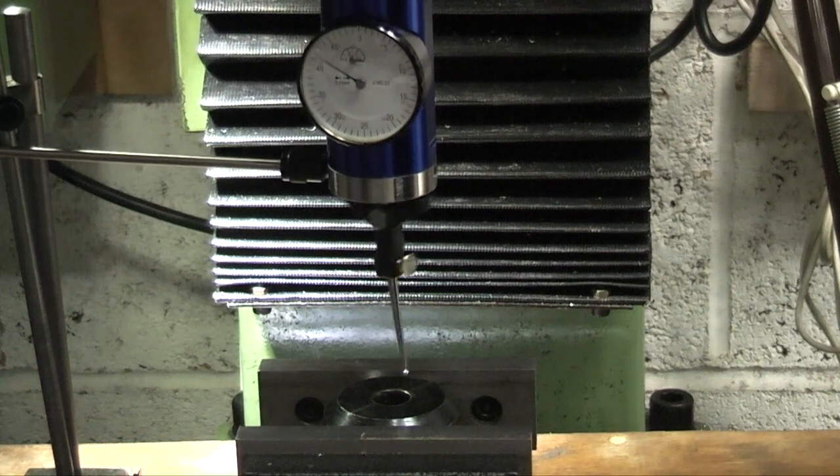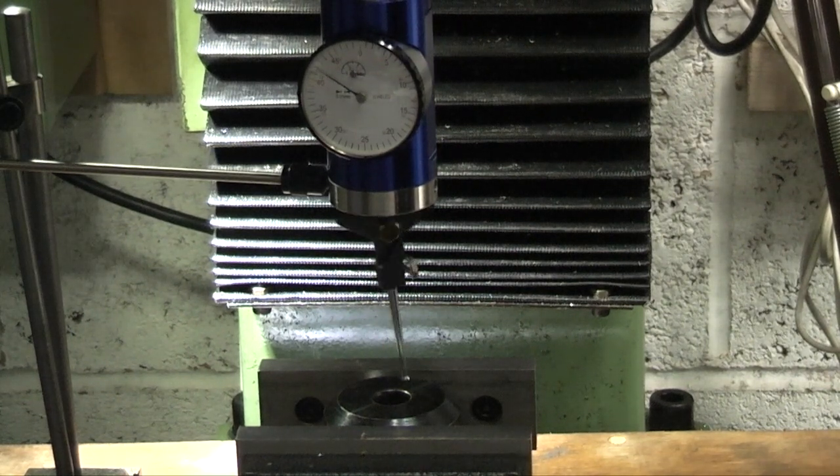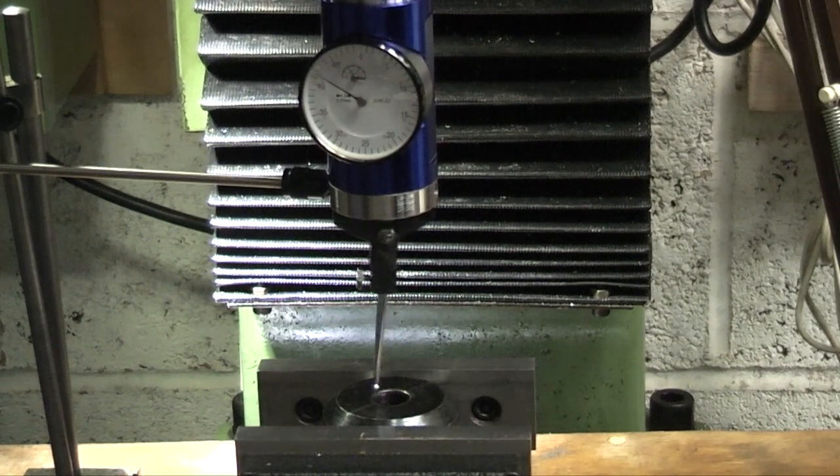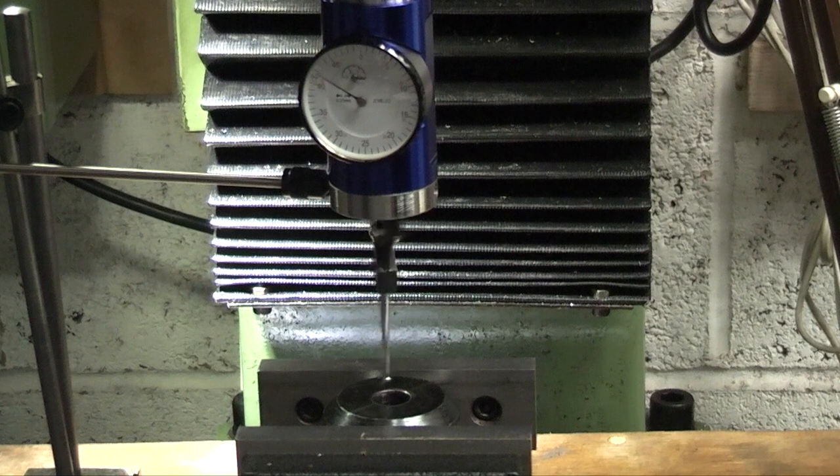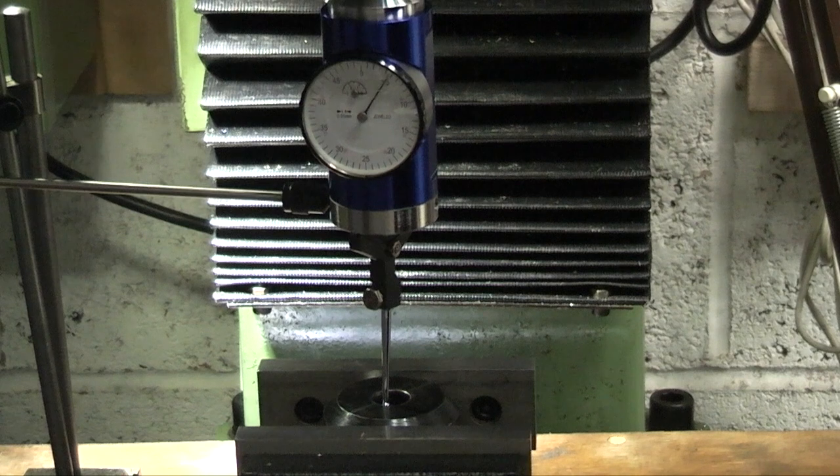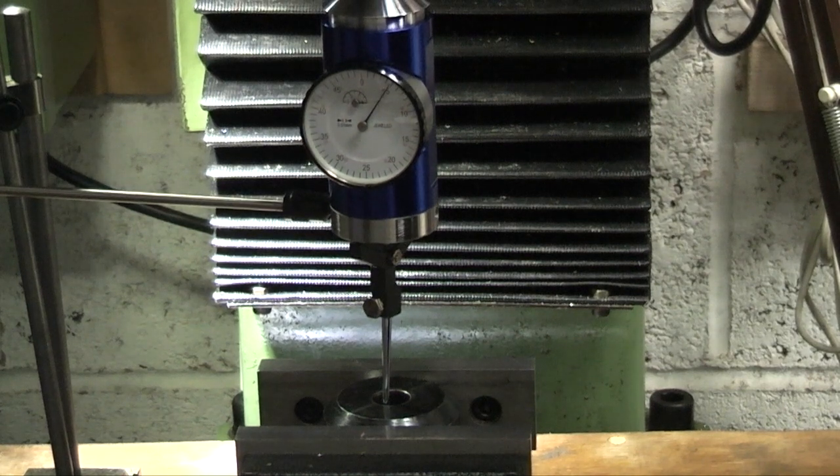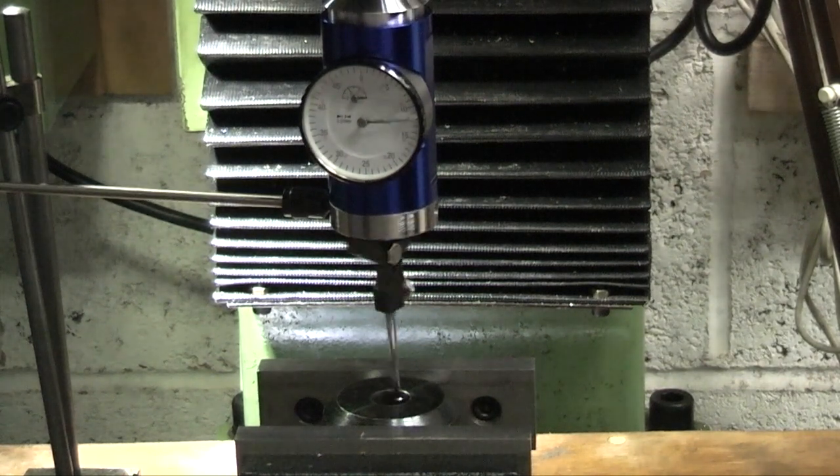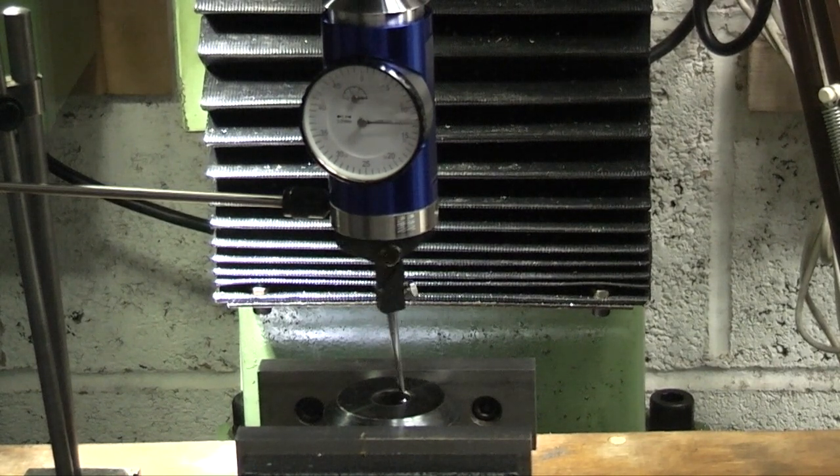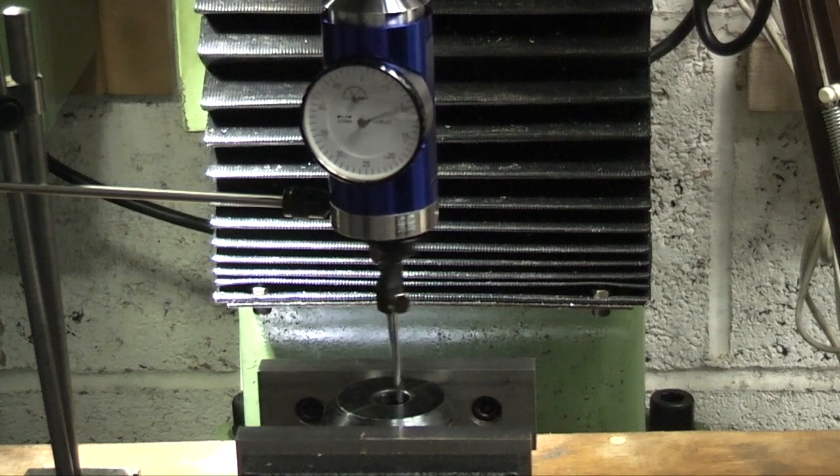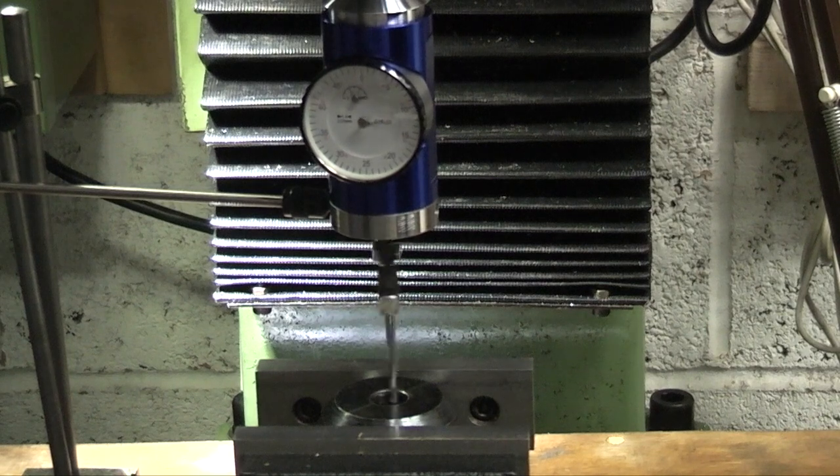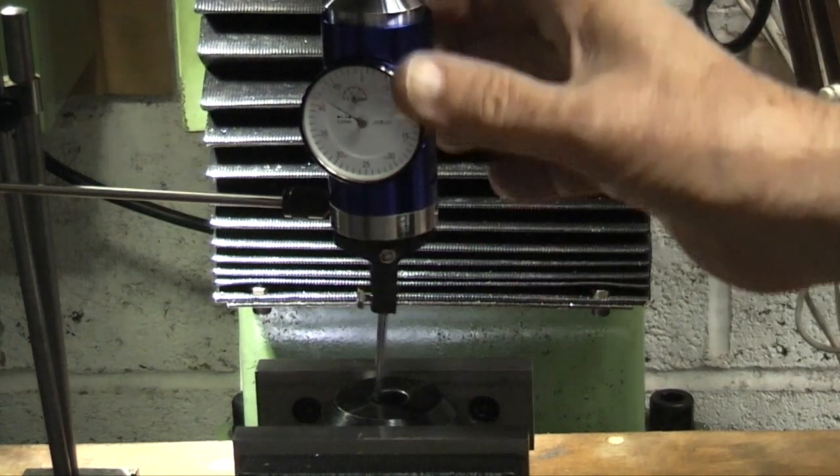Lower it down. Center the spindle by eye. That's about right. Lower it down into the bore. You can see there it's running out. Now if I turn the handle on the table the wrong way. You see the whole body is moving up and down.